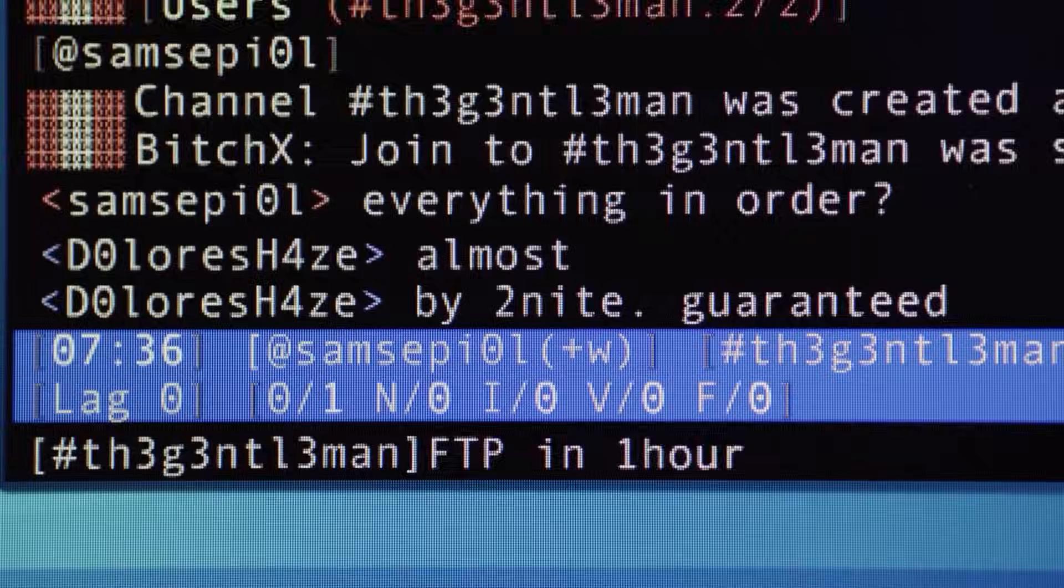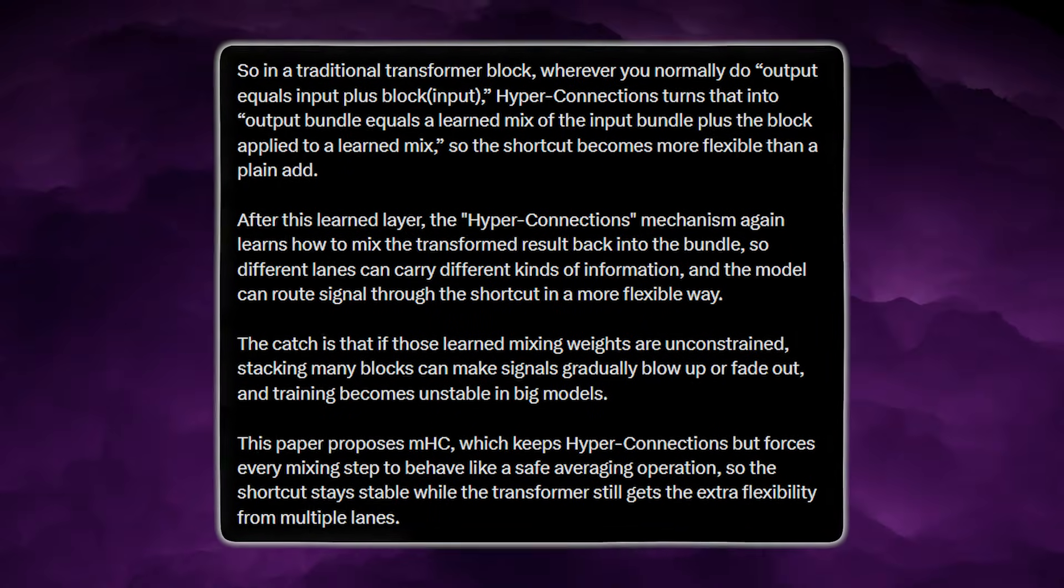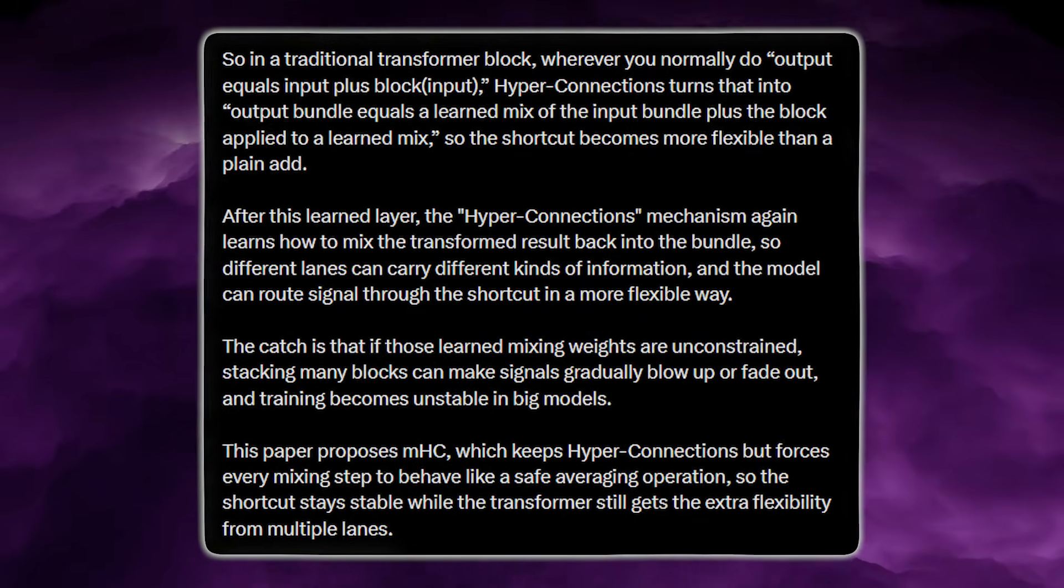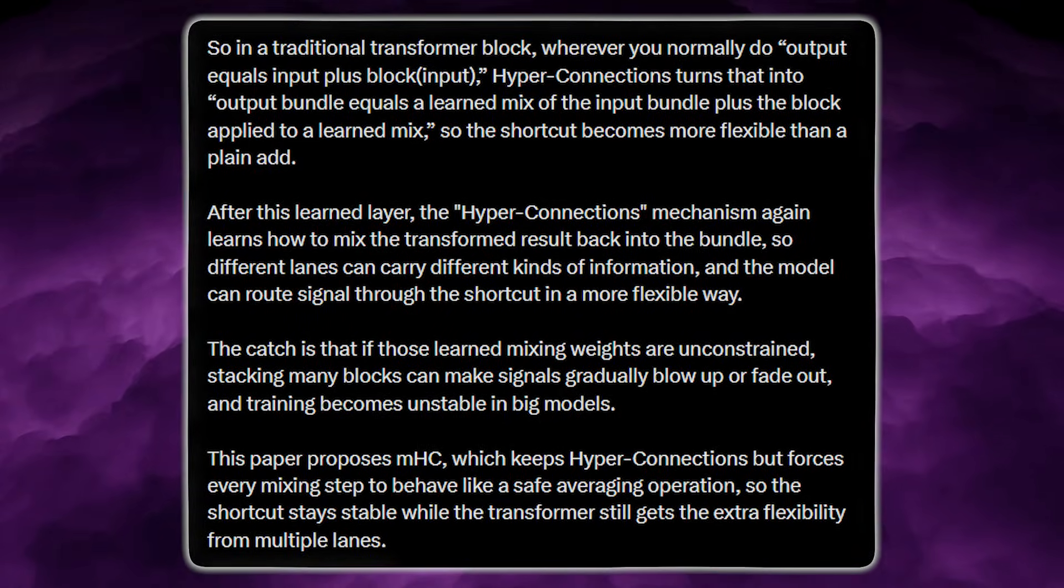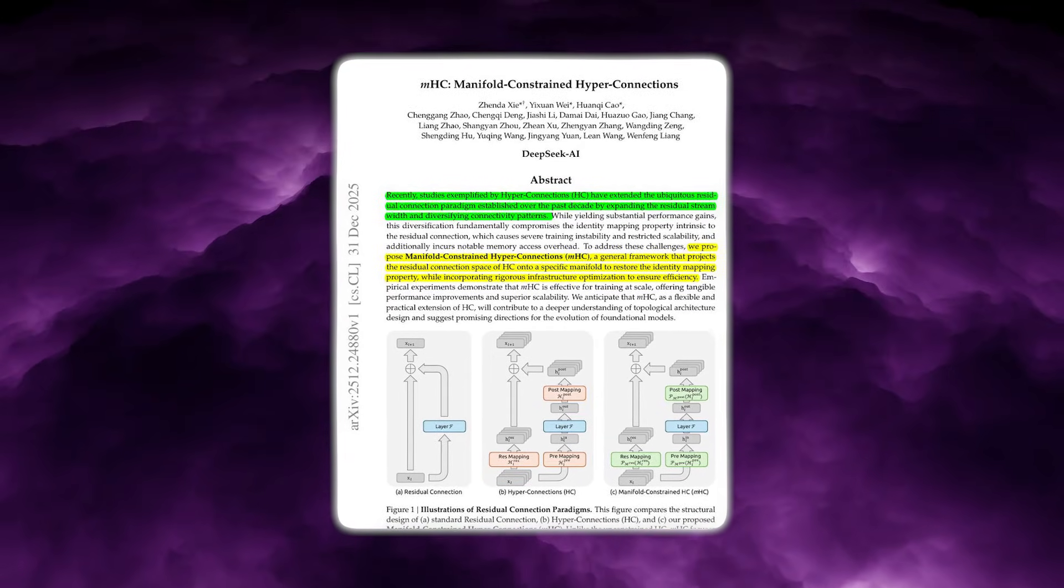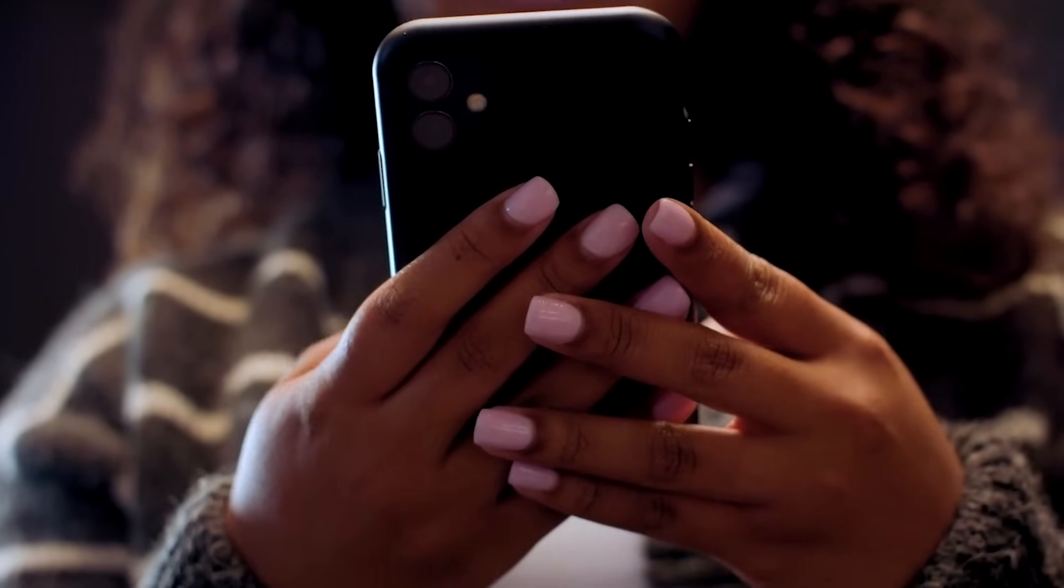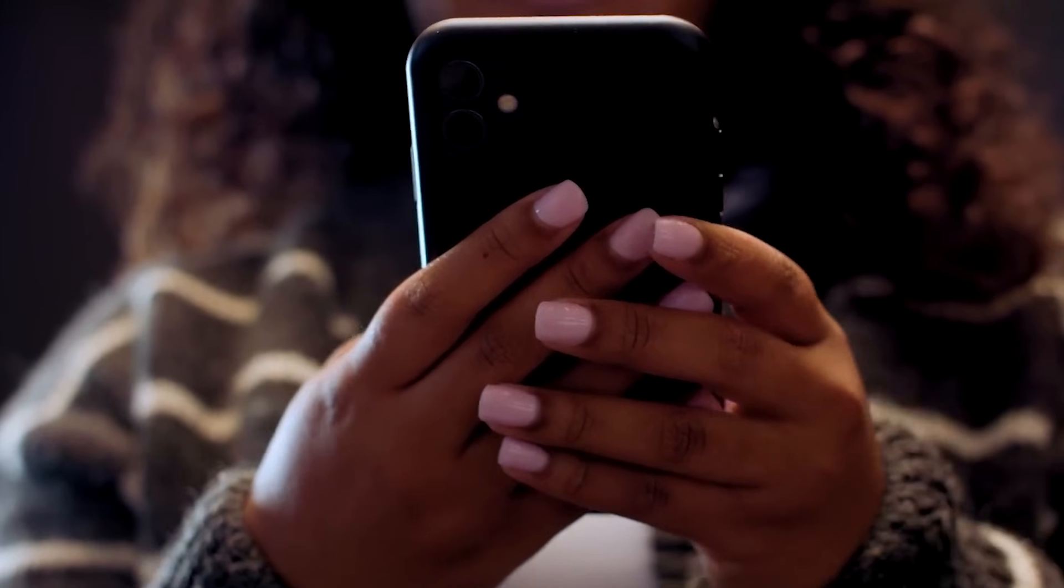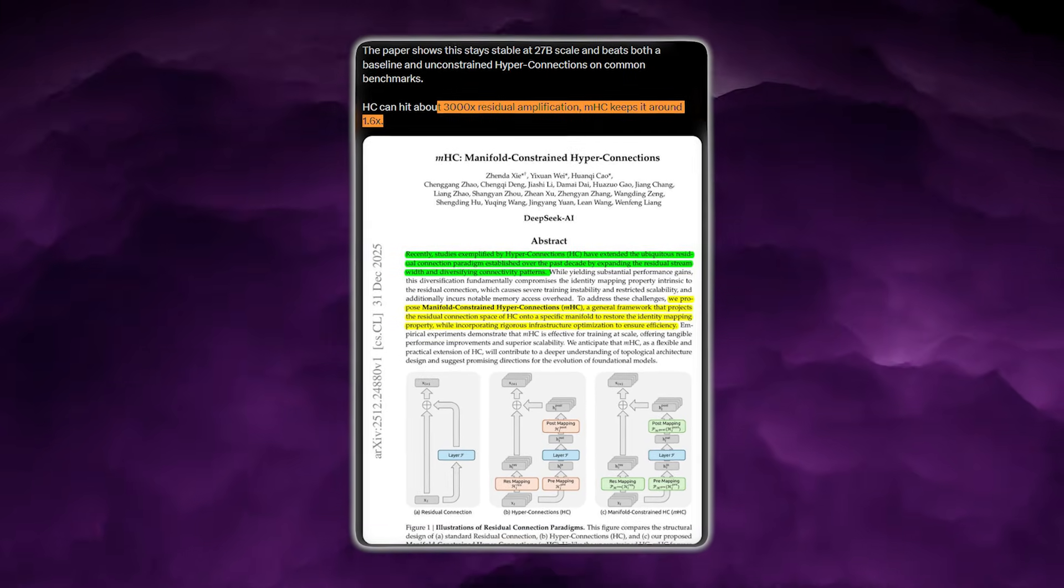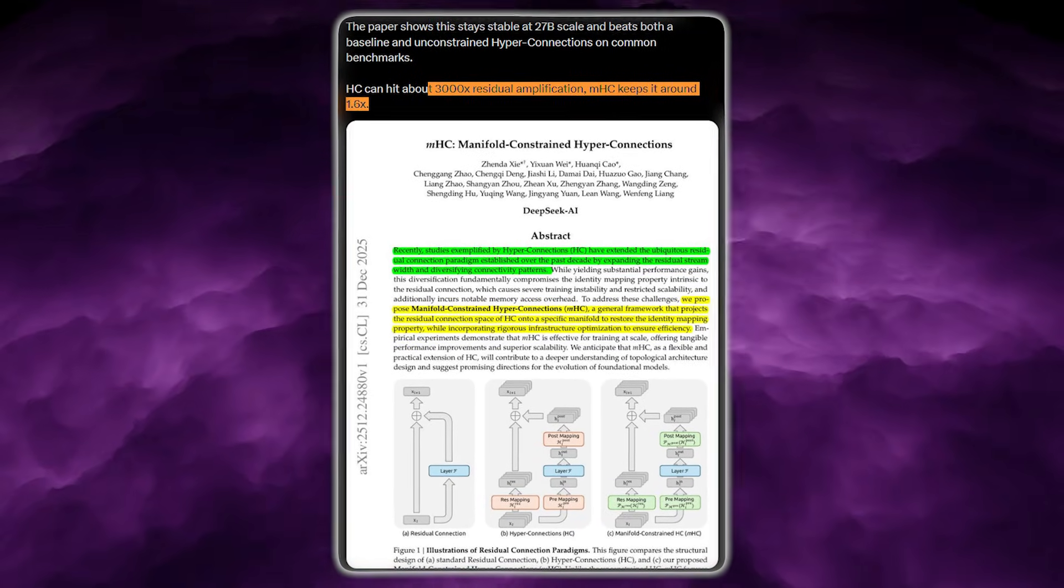But A governs everything. It's the key table that decides how information blends across shortcut streams as layers stack. HC architectures learn A freely, but MHC projects A into the Birkhoff polytope every time before use. The projection starts by exponentiating the elements of A to make them positive. Then it alternatively normalizes rows and columns by dividing them with their respective sums, repeating this process 20 times using the Sinkhorn-Knopp algorithm. At infinity, this converges to a matrix where every row and column sums to 1. They test it across 60 layers and find that the worst backward gradient amplification becomes 1.6 times instead of 3000 times. And 1.6 times is close enough to 1 to preserve training dynamics without distortion.